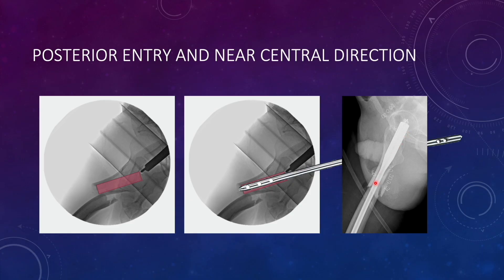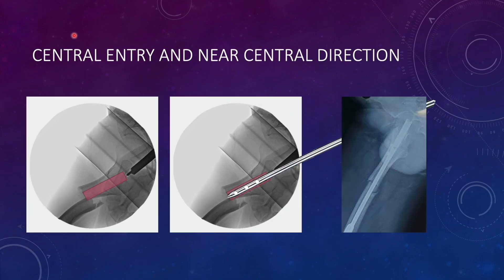When the entry point is central and directed towards the central part of the canal, it might be difficult to go exactly center in the distal canal — you might deviate slightly posteriorly. You can still achieve good reduction starting with a central entry point directed near the canal. However, you might have some residual flexion because of the anterior bow: a central entry in the proximal part does not guarantee central placement distally. There will be some anterior cortical overriding as seen in this picture, with the nail going slightly posterior and slight flexion of the proximal fragment remaining.